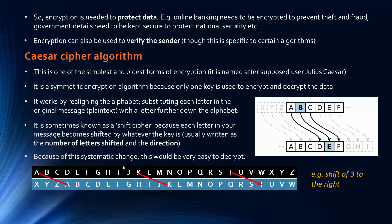Here is an example of a shift of three to the right, so A becomes X and K becomes H. For example, the word 'hello' in this example would be encrypted to E, B, I, I, and L. But as I say, it's a very easy one to crack because it's very obvious what's happening once you work out the general idea.